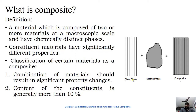Generally, a composite material contains two types of phases: the fiber phase and the matrix phase. When we combine both phases we get a composite material. The fiber phase is called the reinforcement phase. This resulting composite material will have significant properties compared to the individual reinforcement and matrix materials.